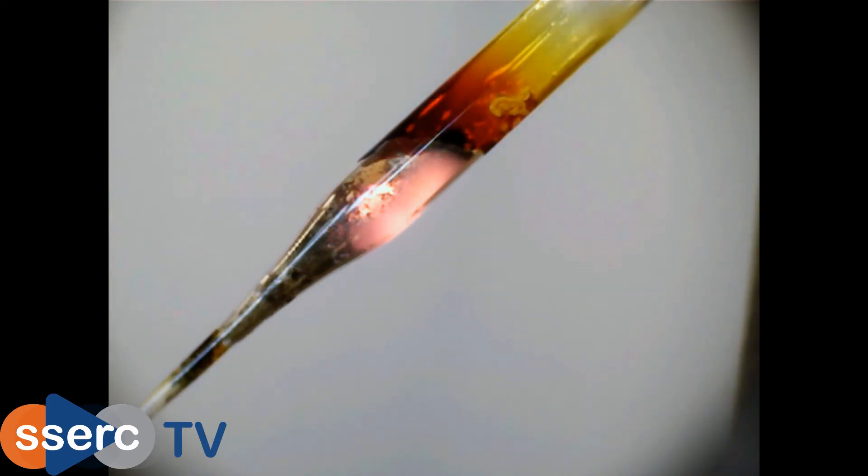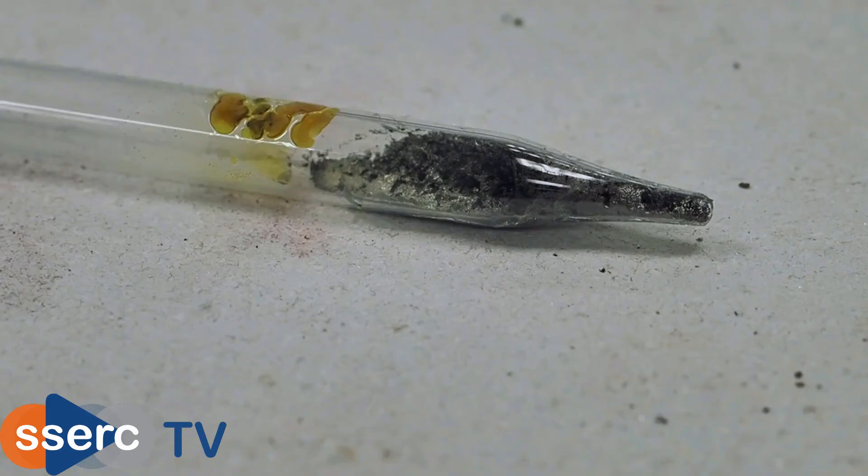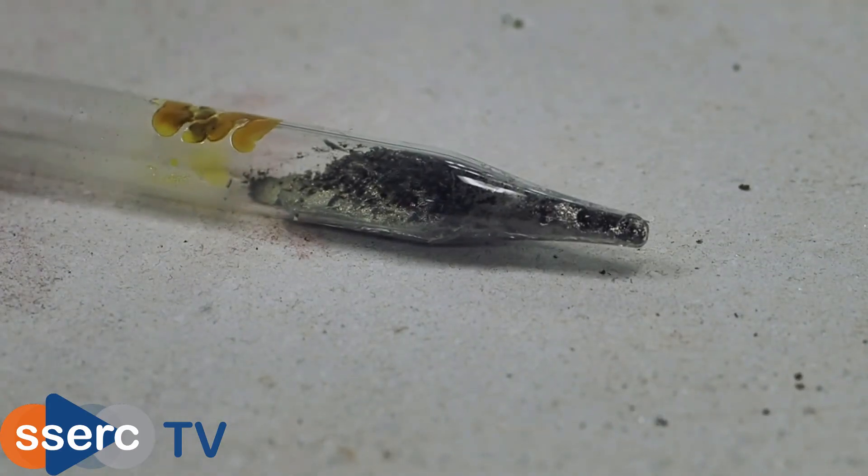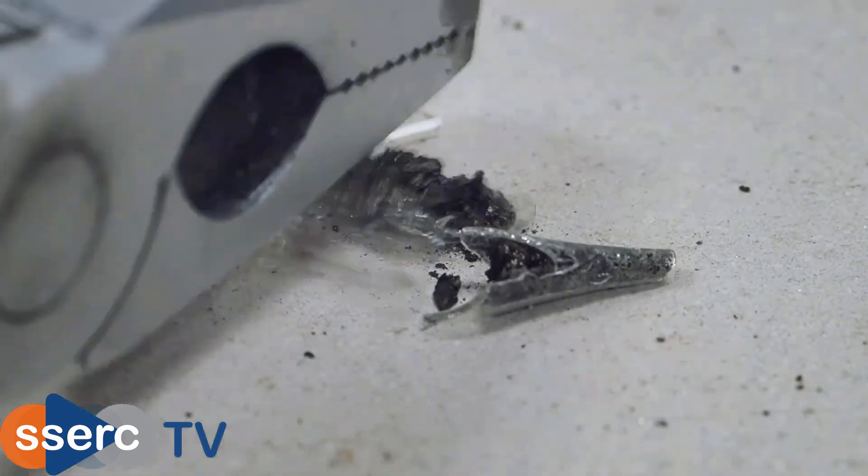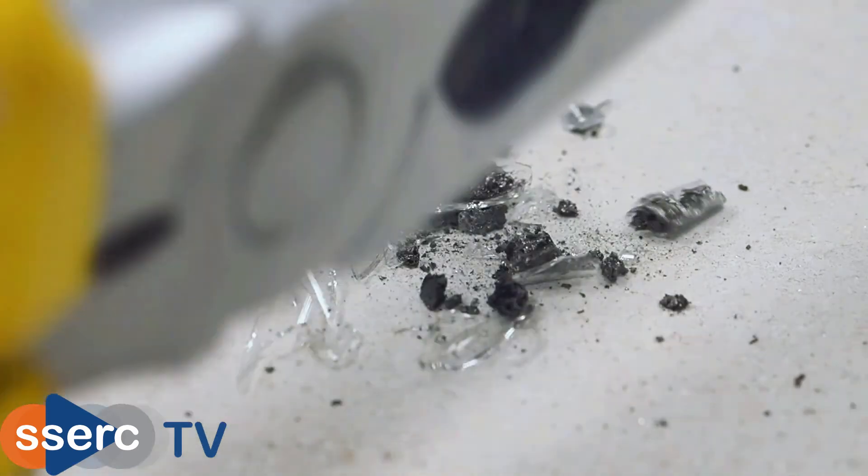Once the reaction is over let the tube cool and then extract the residue. We'll need to break the pipette for this. You can see that we have a shiny grey metallic looking substance. This is iron sulfide.